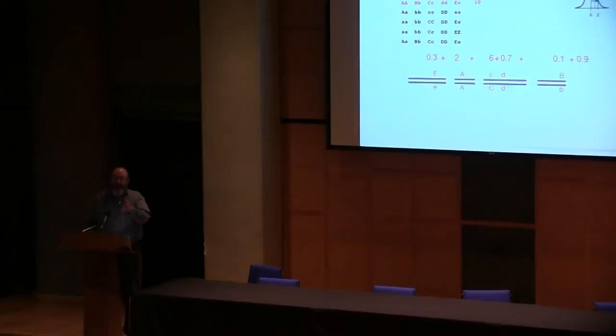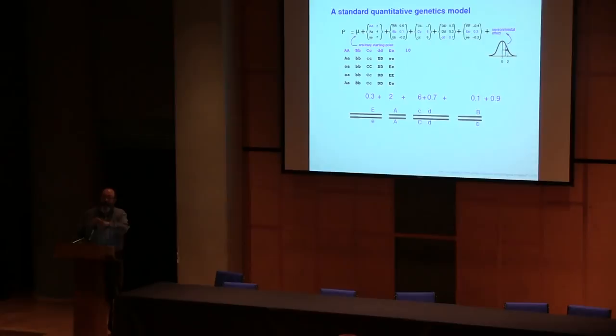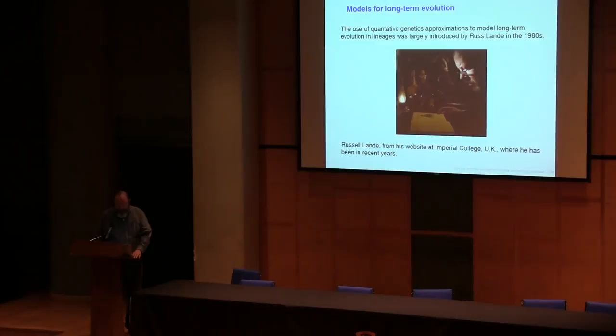Now if you have a character whose determination works this way, what will happen as it evolves along the lineage in a phylogeny? What we're going to do is assume that what happens is two things. One is that the gene frequencies of these loci will wander by genetic drift, by random genetic drift. And if you do that, you will find out that each gene frequency is approximated by Brownian motion.